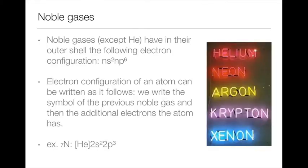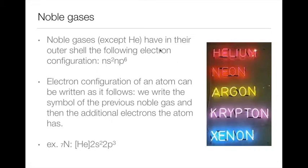Let's talk about noble gases. You should know the first five of them: helium, neon, argon, krypton, and xenon. Noble gases have in their outer shell the electron configuration ns² np⁶. For neon it's 2s² 2p⁶, argon is 3s² 3p⁶, krypton is 4s² 4p⁶, and xenon also has 4s² 4p⁶ in the outer shell.